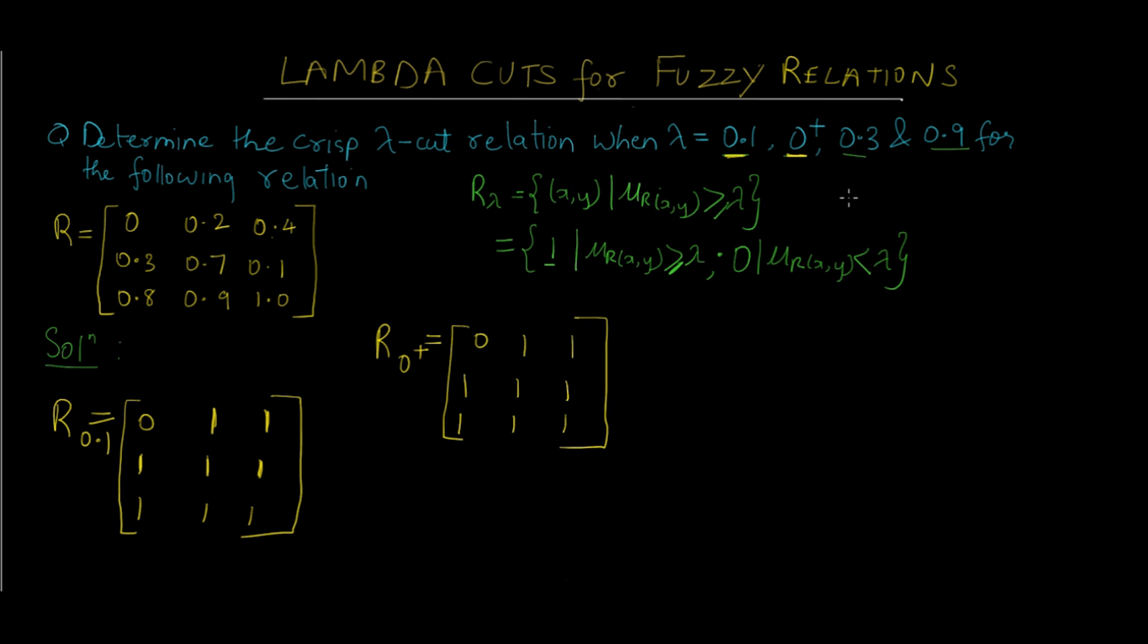Now let's see for lambda value of 0.3. R₀.₃. We have to compare each of these original matrix values with 0.3 and see if it is greater or smaller. 0 is smaller than 0.3, so it is replaced by 0 itself. 0.2 is smaller than 0.3, so we replace it with 0. 0.4 is greater than 0.3, so according to the condition we replace it with 1. 0.3 is not greater but it is equal, and it satisfies the condition, so we replace it with 1. 0.7 is greater than 0.3, replace it with 1.